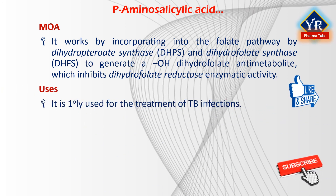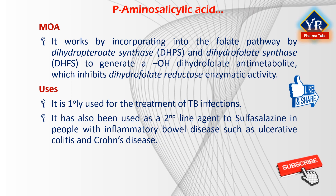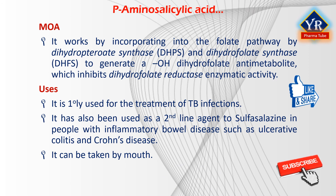Paraaminosalicylic acid is primarily used for the treatment of tuberculosis infections. Specifically, it is used to treat active drug-resistant tuberculosis together with other anti-tubercular medications. It has also been used as a second-line agent to sulfasalazine in people with inflammatory bowel disease such as ulcerative colitis and Crohn's disease. It is typically taken by mouth.